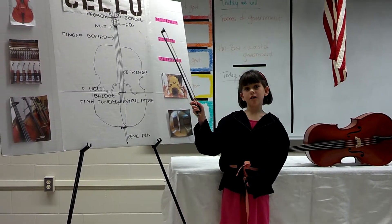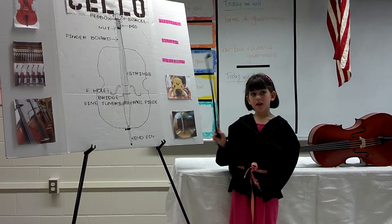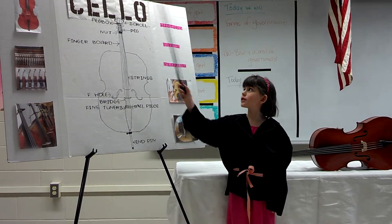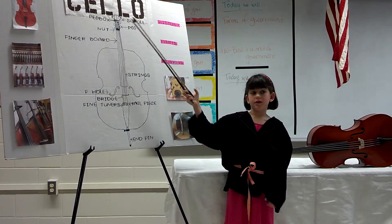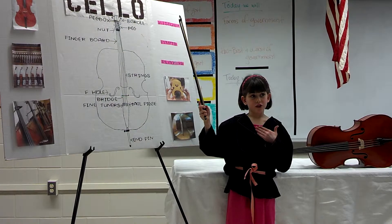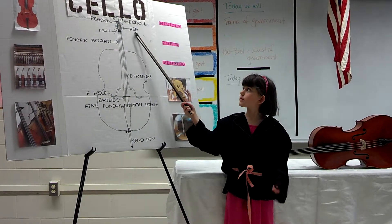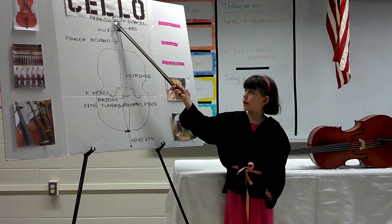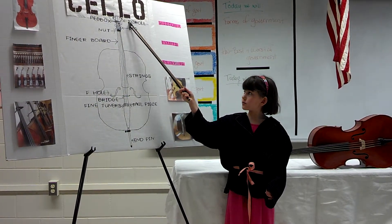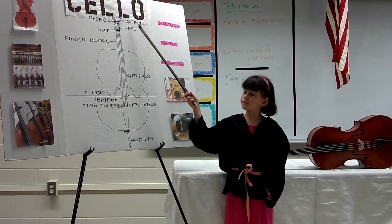The parts of the cello, top to bottom. The highest part is the scroll, which is just decorative. Then we have the peg box, which surrounds the pegs.